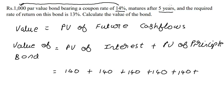So we receive ₹140 five times: 140 + 140 + 140 + 140 + 140 — one, two, three, four, five. And in the fifth year, once it matures, you will also get your principal back, which is ₹1000.